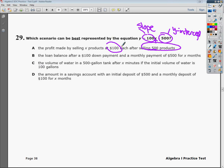B says the loan balance after a $100 down payment and a monthly payment of $500 for x months. This is the loan balance after a $100 down payment, that's your starting point. But we know that our starting point is 500, so B can't be the correct answer either.